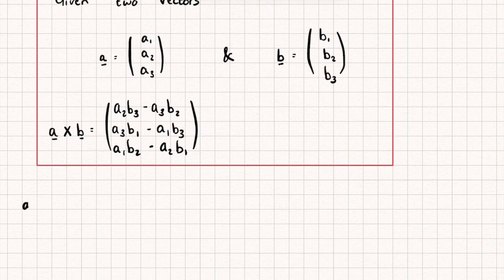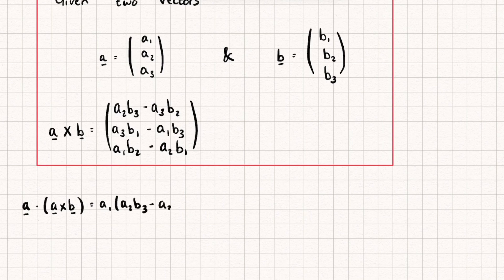So we're first going to do a dot a cross b. Let's calculate this. We're going to get a1 multiplied by (I'm about to say a lot of numbers and letters) a2b3 minus a3b2 plus a2 multiplied by a3b1 minus a1b3 plus a3 multiplied by a1b2 minus a2b1.